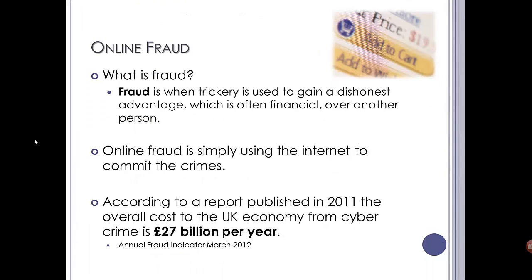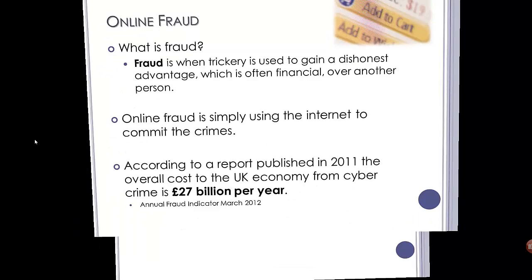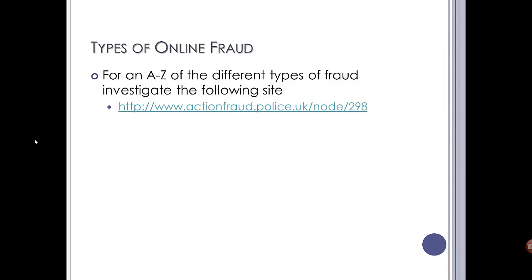We mentioned online fraud earlier on. Fraud is when trickery is used to gain a dishonest advantage, which is often financial. Online fraud is literally just using the internet and IT to commit the crime. The annual fraud indicator published in March 2012 stated that in 2011, the overall cost to the UK economy from cybercrime was approximately £27 billion per year. There's a website where you can see all the different types of online fraud.